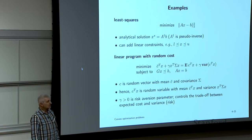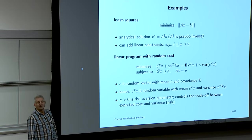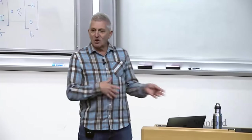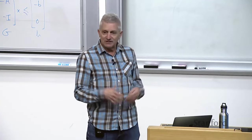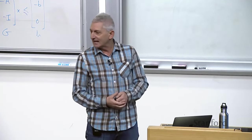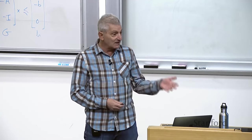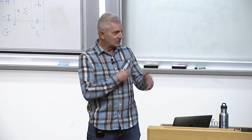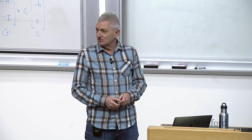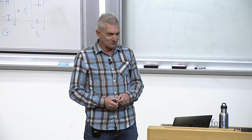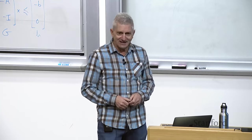There are fields that don't know you can add linear constraints and still have a tractable problem. People invent incredibly complicated iterative methods for fitting parameters with non-negativity constraints, when the right answer is: that's a QP, just solve it.